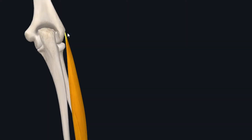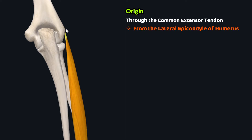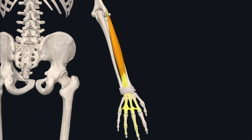Looking at the origin of this muscle, as you can see, this muscle has its origin through the common extensor tendon from the lateral epicondyle of the humerus. After arising from the lateral epicondyle, the fibers form a muscle belly which travels inferiorly towards the distal forearm.